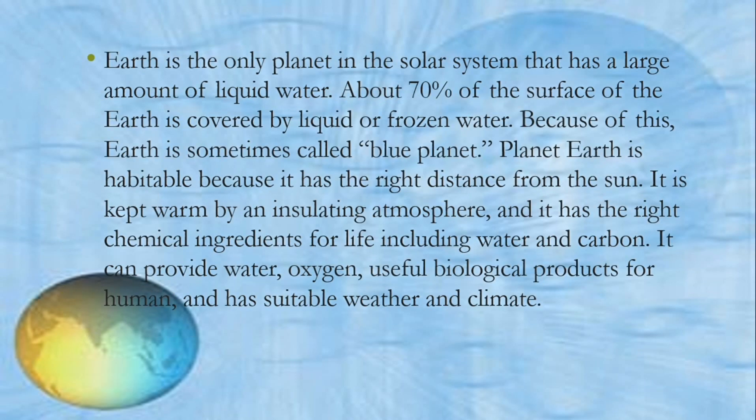Earth is the only planet in the solar system that has a large amount of liquid water. About 70% of the surface of the Earth is covered by liquid or frozen water. Because of this, Earth is sometimes called blue planet. Planet Earth is habitable because it has the right distance from the sun, it is kept warm by an insulating atmosphere, and it has the right chemical ingredients for life, including water and carbon.